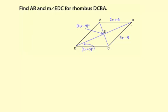The other x value is for BC. For a rhombus, all four sides are congruent, so we can write an equation: 2x plus 6 equals 5x minus 9.